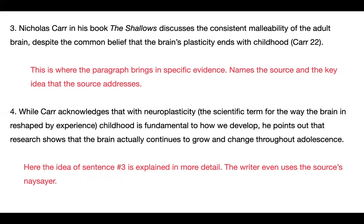Number three: 'Nicholas Carr in his book The Shallows discusses the consistent malleability of the adult brain, despite the common belief that the brain's plasticity ends with childhood.' This is where the paragraph brings in specific evidence. It names the source — Nicholas Carr, The Shallows — and the key idea that the source addresses. Malleability means changeability, like clay is malleable — you can reshape it. What it's saying is the brain is malleable. This is coming right out of Carr. This sentence is specific evidence and it brings the source in.